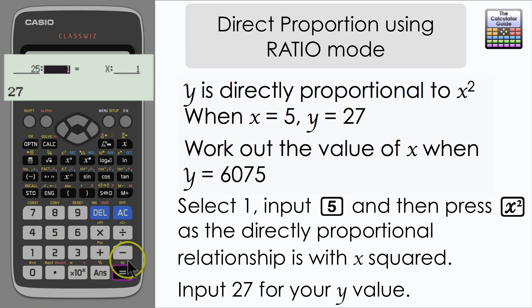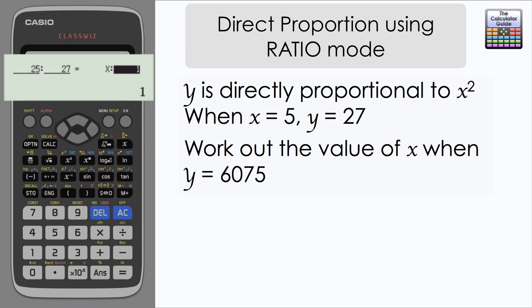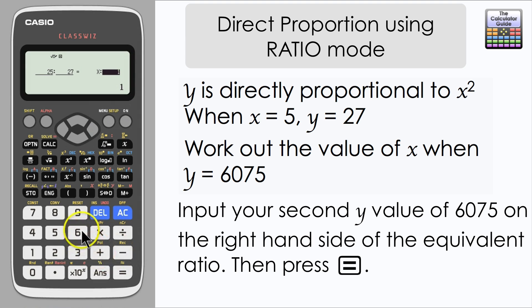And this is when the value of y is 27, so I'm going to input 27 on the other side of the ratio. The calculator then moves to the right hand side of the second ratio where we're going to input the value of y that we're given secondly, 6075.